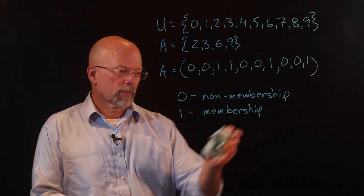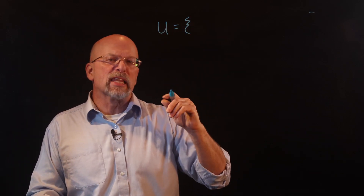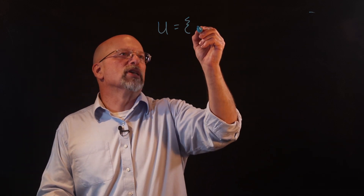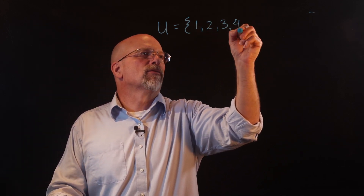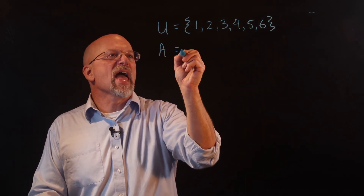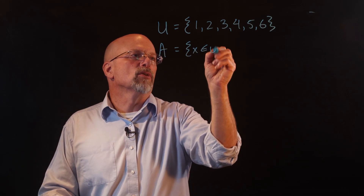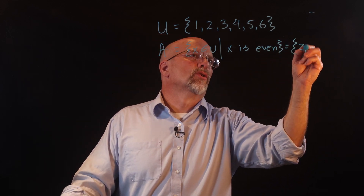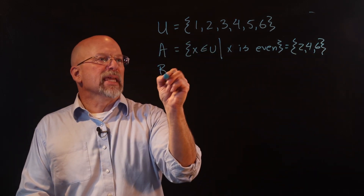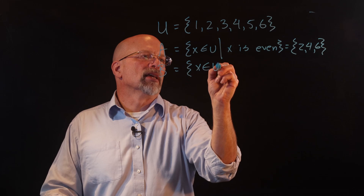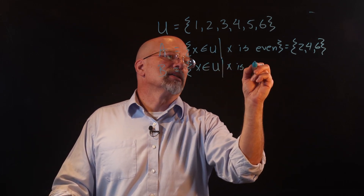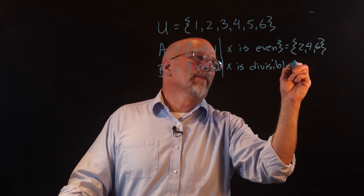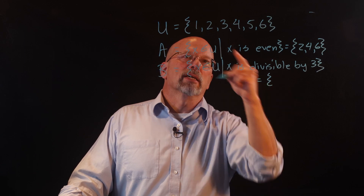Now let's do a quick example to see how this might work if we were going to implement something on the machine. We'll have a universal set that is the set of positive integers up to six: {1, 2, 3, 4, 5, 6}. Let's say A is the set of all x in the universal set such that x is even — that gives us {2, 4, 6}. And B is the set of all x in the universal set such that x is divisible by three — that gives us {3, 6}.